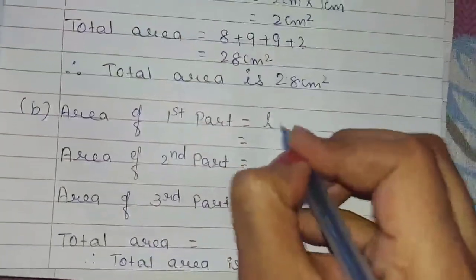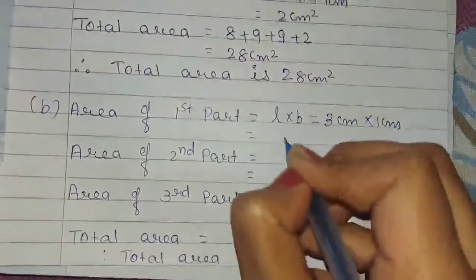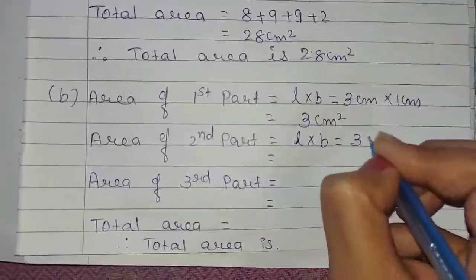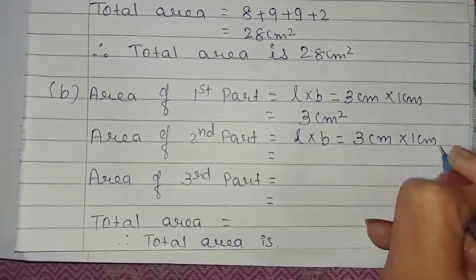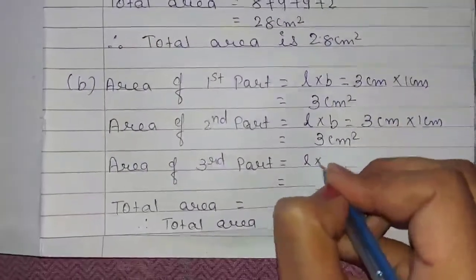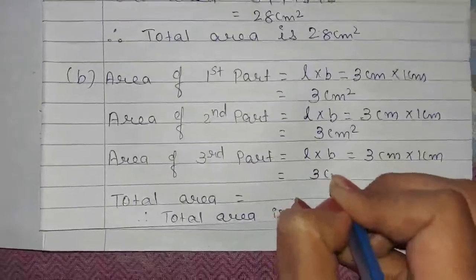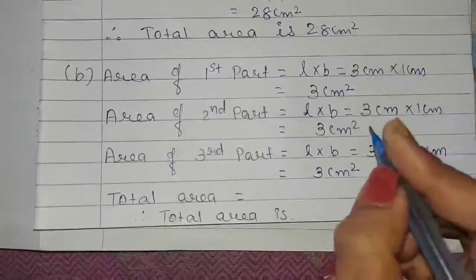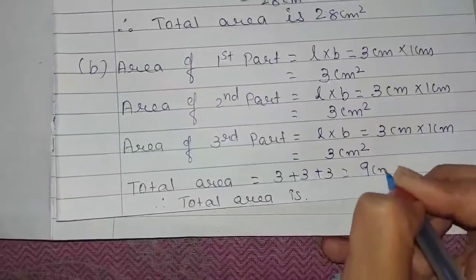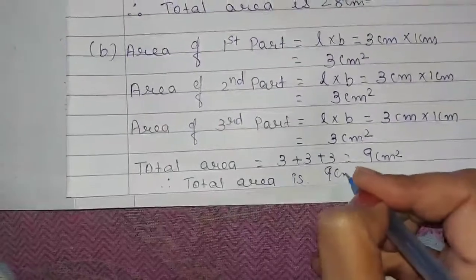Area of first part equals length multiplied by breadth, that is 3 cm multiplied by 1 cm, equals 3 cm square. Area of second part equals length multiplied by breadth. Area of third part equals length multiplied by breadth, that is 3 cm multiplied by 1 cm, equals 3 cm square. So 3 plus 3 plus 3 equals 9 cm square. Therefore, total area is 9 cm square.